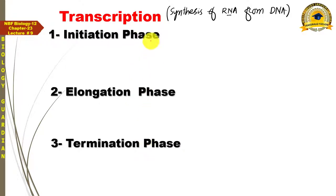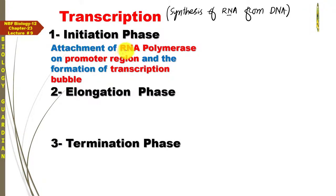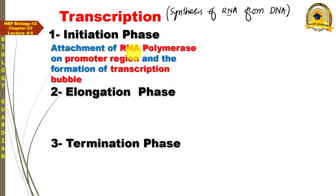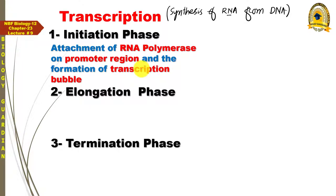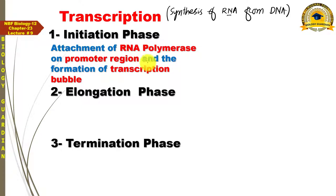پہلا phase جسے initiation phase کہتے ہیں: it involves the attachment of RNA polymerase on the promoter region and the formation of transcription bubble۔ یہاں تین اہم چیزیں ہیں: RNA polymerase کیا ہوتا ہے، promoter region کیا ہے، اور transcription bubble کسے کہتے ہیں۔ Initiation phase کی definition: attachment of RNA polymerase on promoter region and the formation of transcription bubble is the initiation phase of transcription۔